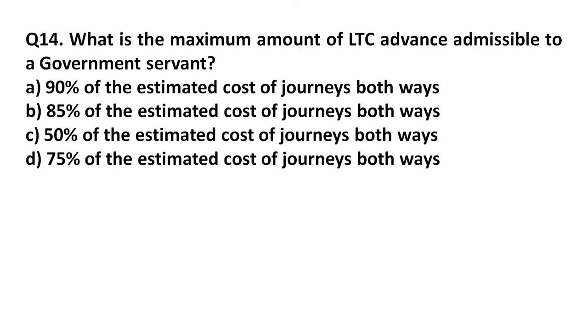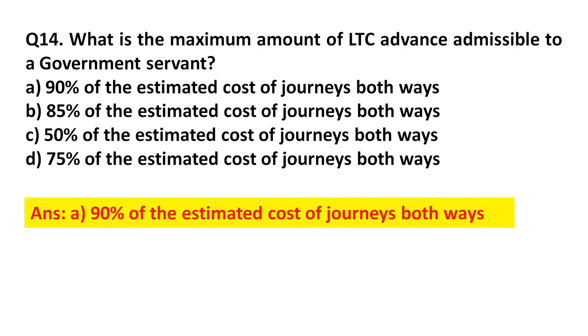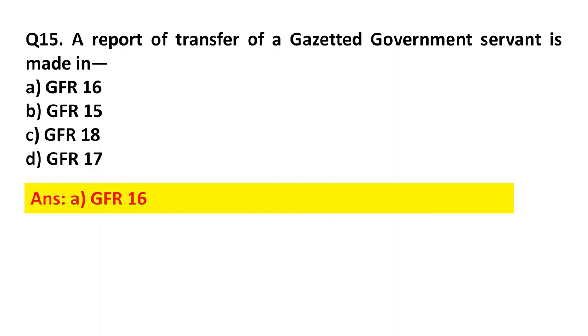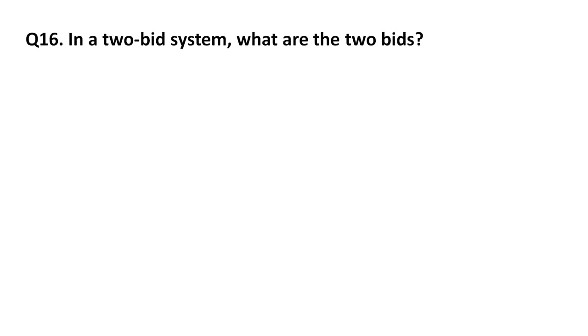Answer to Question 14: Option A, 90 percent of the estimated cost of journeys both ways. Question 15: A report of transfer of a gazetted government servant is made in which GFR form? Option A: GFR 16. Option B: GFR 15. Option C: GFR 18. Option D: GFR 18. Answer: Option A, GFR 16.